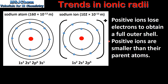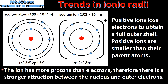So positive ions are smaller than their parent atoms. The reason for this trend is that the ion has more protons than electrons, therefore there is a stronger attraction between the nucleus and the outer electrons. The second reason is that the sodium ion only has 2 occupied energy levels compared to 3 occupied energy levels for the sodium atom.